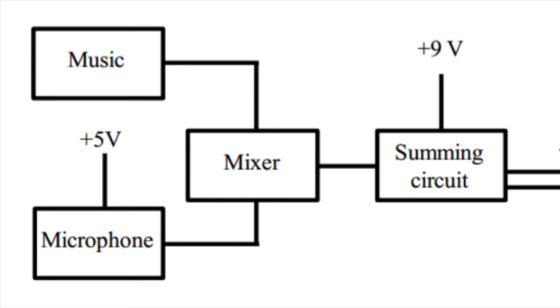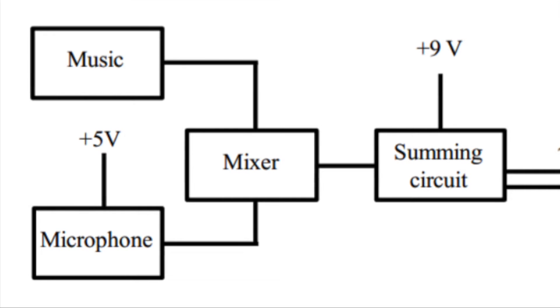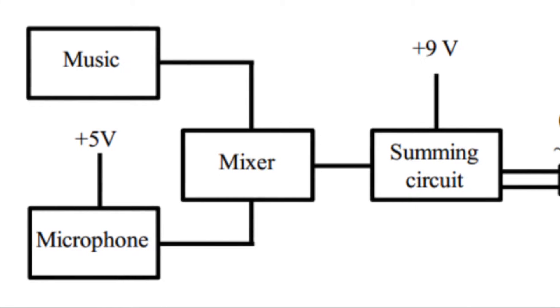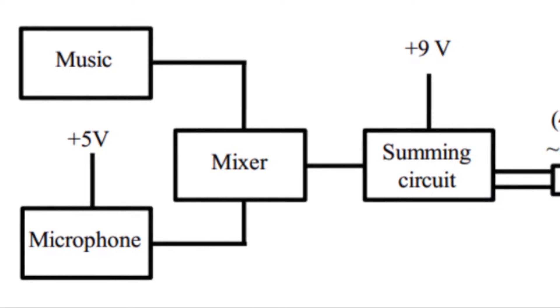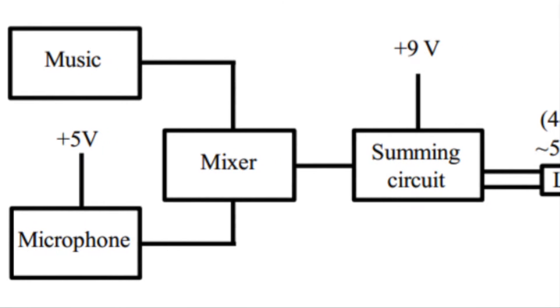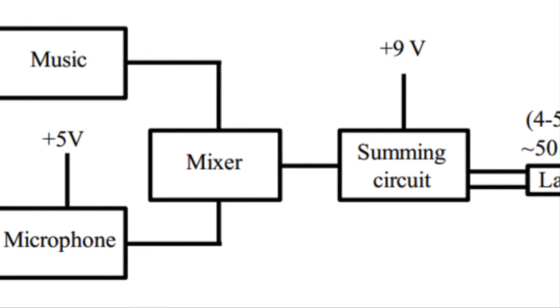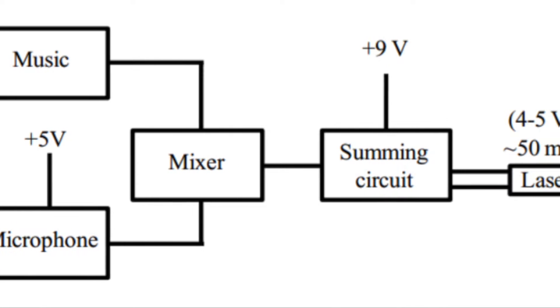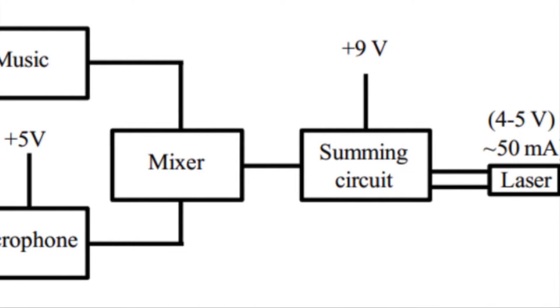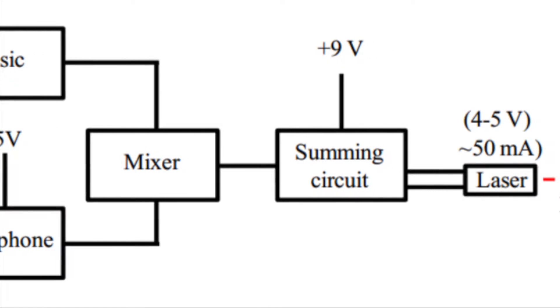Shown here is an overview of the circuit design. First, two AC inputs — music transmitted through an audio jack and a signal from a microphone — are combined together in a mixer circuit.